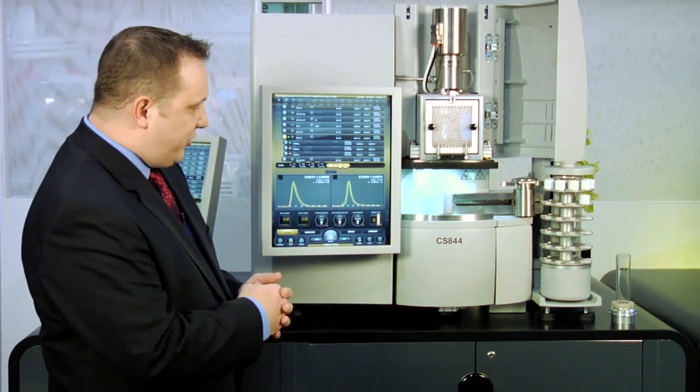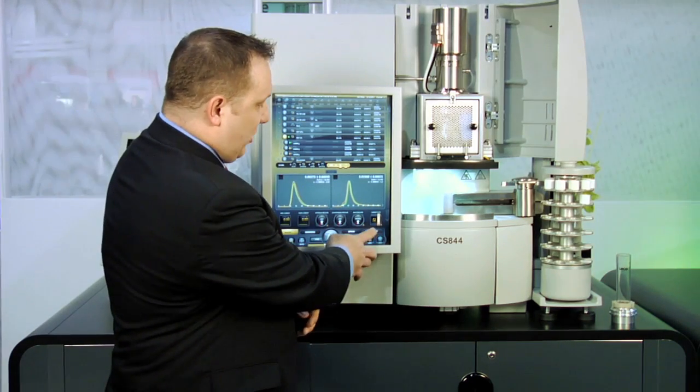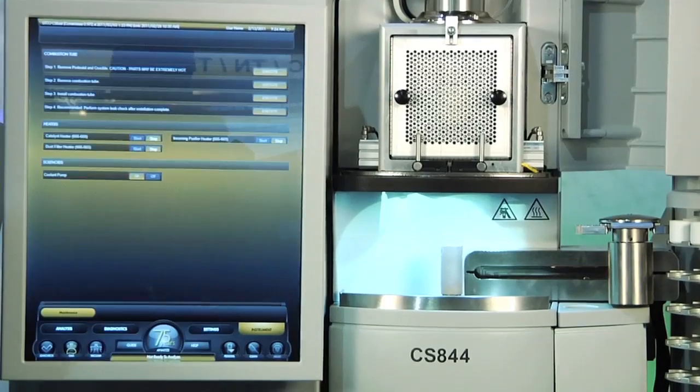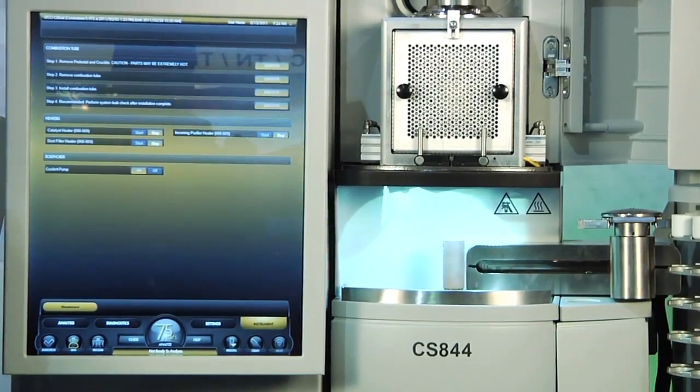I'm going to go into the instrument software and enter into a maintenance section. This is going to give me four prompts. The first of which would be to remove the pedestal and crucible if present.